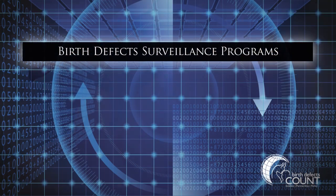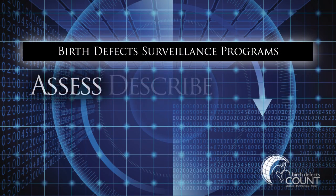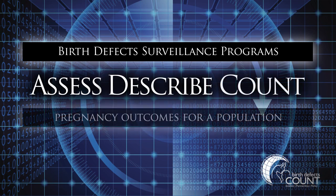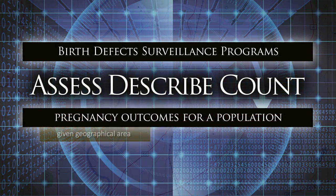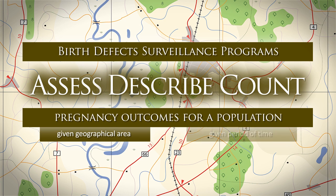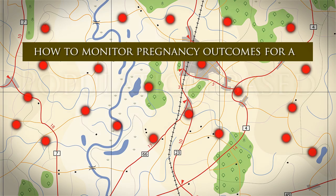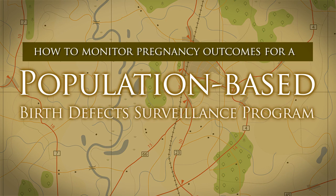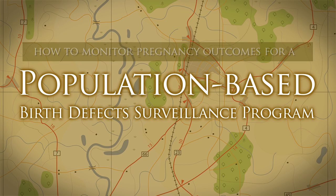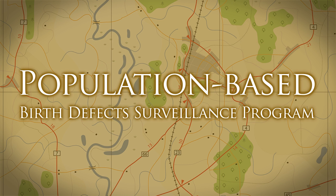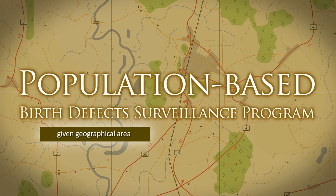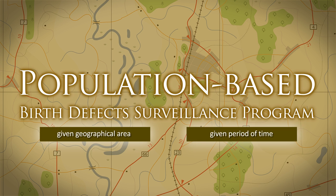Birth defect surveillance programs assess, describe, and count pregnancy outcomes for a population within a given geographical area within a given period of time, such as one year. In this video, we will provide an overview on how to monitor pregnancy outcomes for a population-based birth defect surveillance program. A population-based surveillance program consists of a population of births in a given geographical area collected during a given period of time.